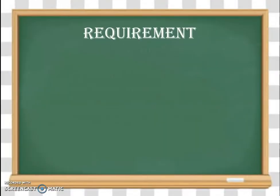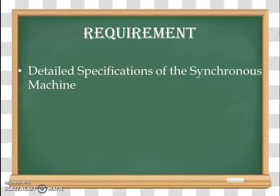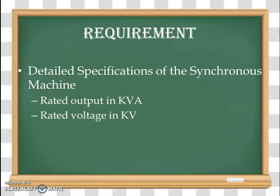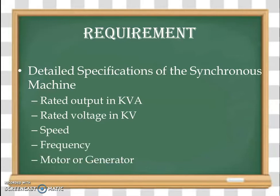To carry out this design, the designer needs the following parameters to start. First of all, we require detailed specifications of the synchronous machine. In the specification, we basically require rated output in KVA, or sometimes in MVA if a bigger alternator needs to be designed. Then rated voltage in KV, speed, frequency, and whether it is a motor or generator we need to design accordingly.